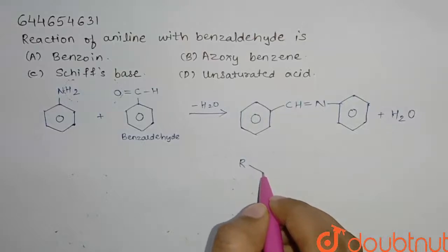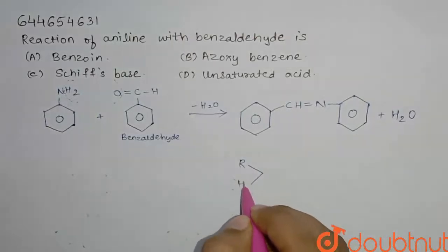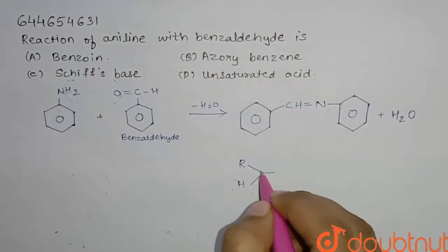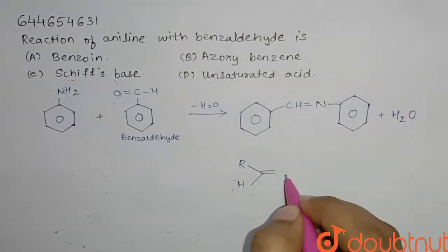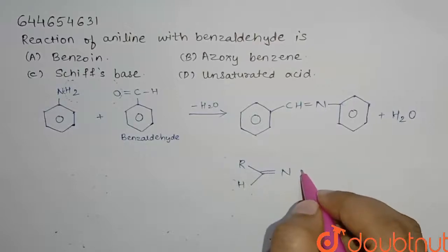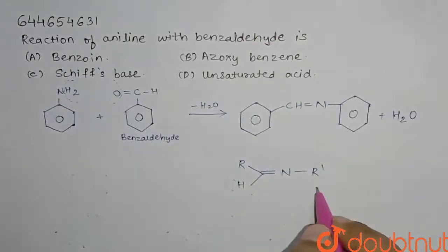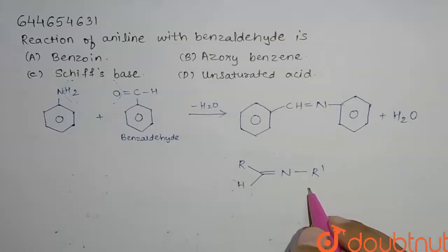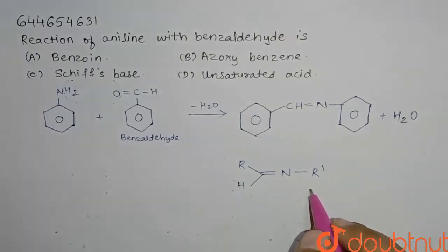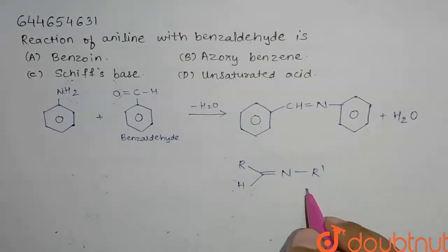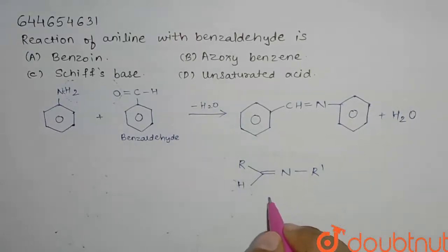The general structure for a Schiff base is R-CH=N-R', where nitrogen is attached to two alkyl groups R and R', and one hydrogen is also present. We can draw our product in this general structure form — this is the general structure for a Schiff base.